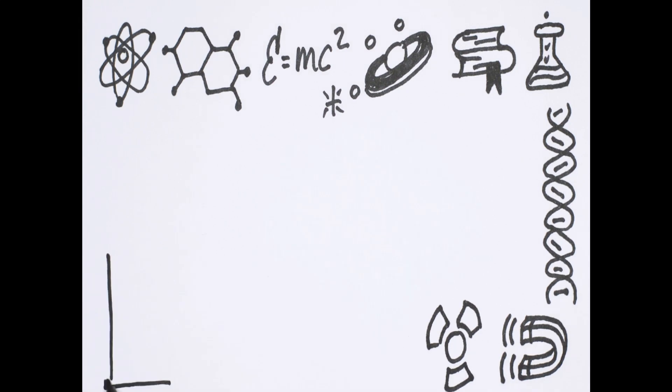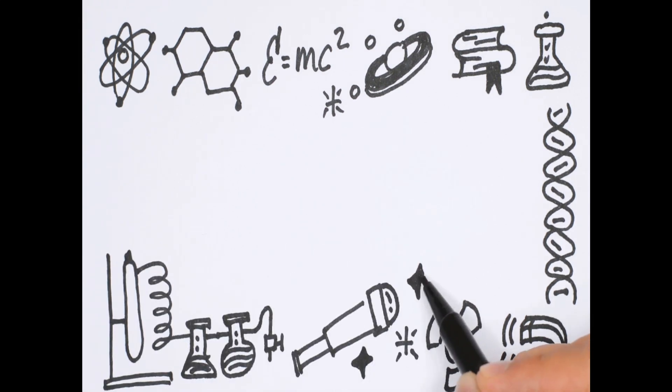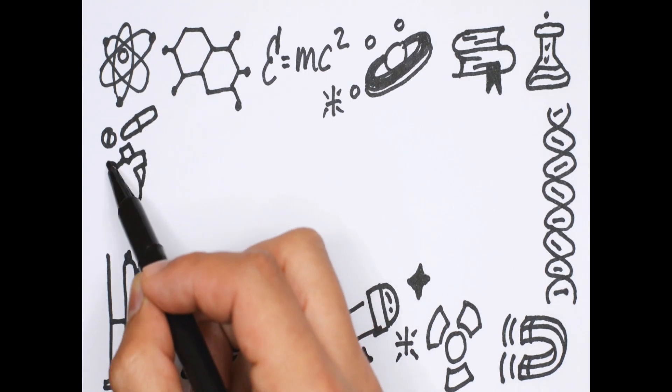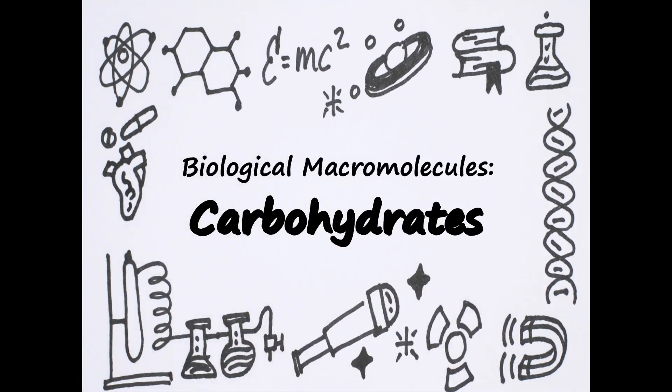Welcome to ThinkScience where today we're starting off our video segment on biological macromolecules. The four biological macromolecules are carbohydrates, lipids, proteins, and nucleic acids. Let's get started.